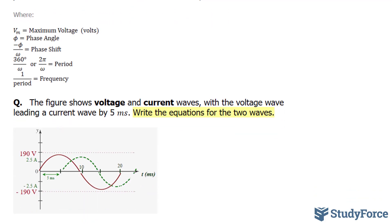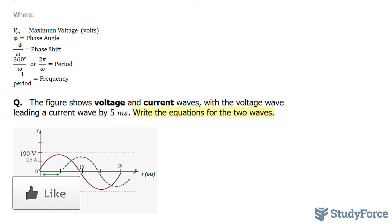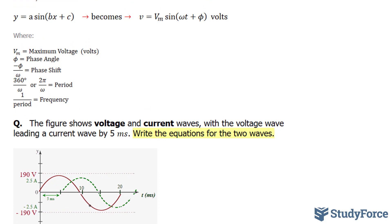The question reads: the figure shows voltage and current waves, with the voltage wave leading a current wave by 5 milliseconds. Write the equation for the two waves. I'll start by creating the voltage equation. Notice that our voltage wave has a maximum and minimum value of 190, so our maximum voltage is 190. Therefore, V is equal to 190 sine bracket omega T plus phi.